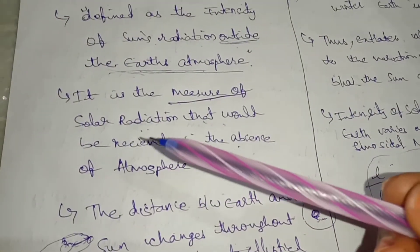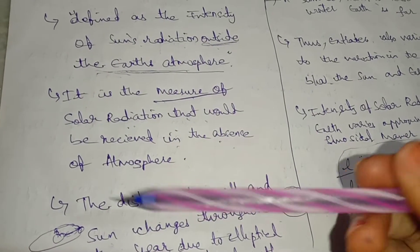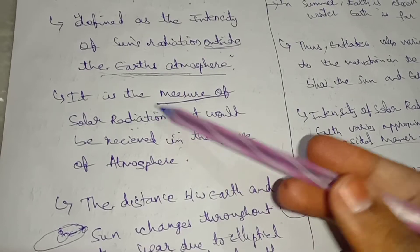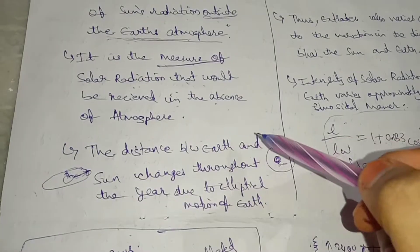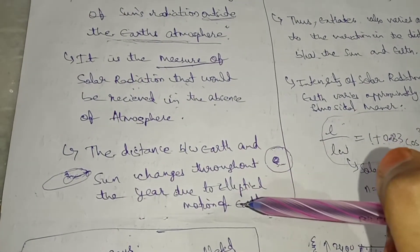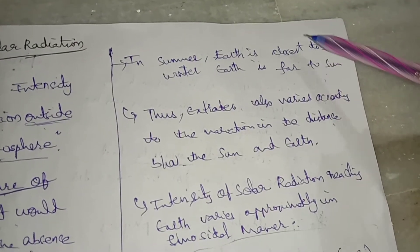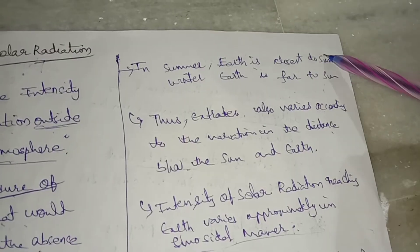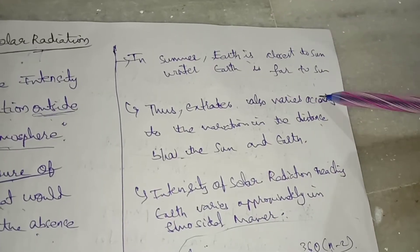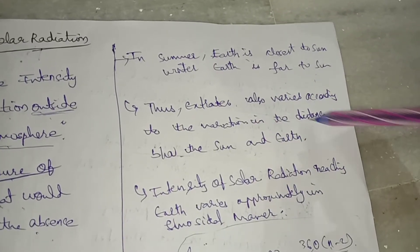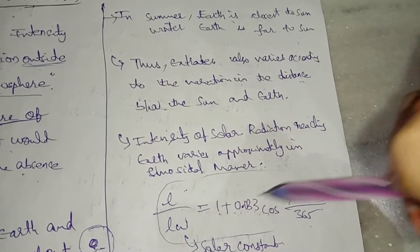It is nothing but the measure of solar radiation that would be received in the absence of atmosphere. The distance between the earth and sun changes throughout the year due to elliptical motion. Earth will be close to the sun in summer; in winter, earth is far from the sun. Thus, extraterrestrial radiation also varies according to the variation in the distance between the sun and earth. The intensity of solar radiation reaching the earth varies approximately in a sinusoidal manner.